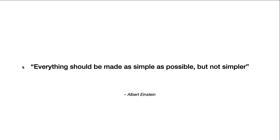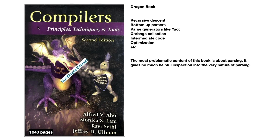My first stop was the Dragon Book - Compiler Principles, Techniques and Tools. It is 1040 pages long and covers a lot of things like recursive descent parsers, bottom-up parsers, parse generators like yacc, garbage collection, intermediate code optimization, etc. I was not interested in all of that. I just wanted to make a simple recursive descent parser and my own simple programming language.